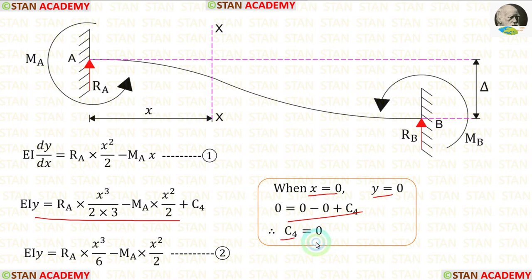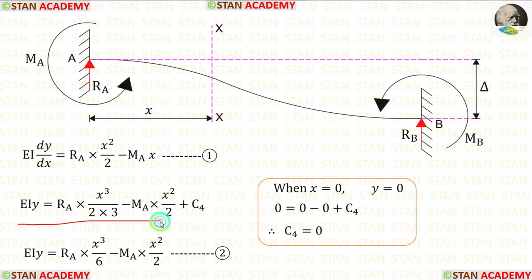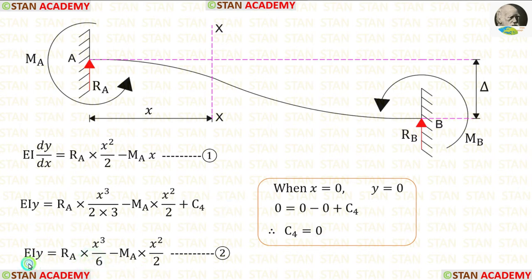When we do that, we are getting C4. For C4, we are getting 0. In this equation, let us apply the value of C4. When we do that, we are getting this. This is the equation for the deflection. Let us keep this equation as number 2.